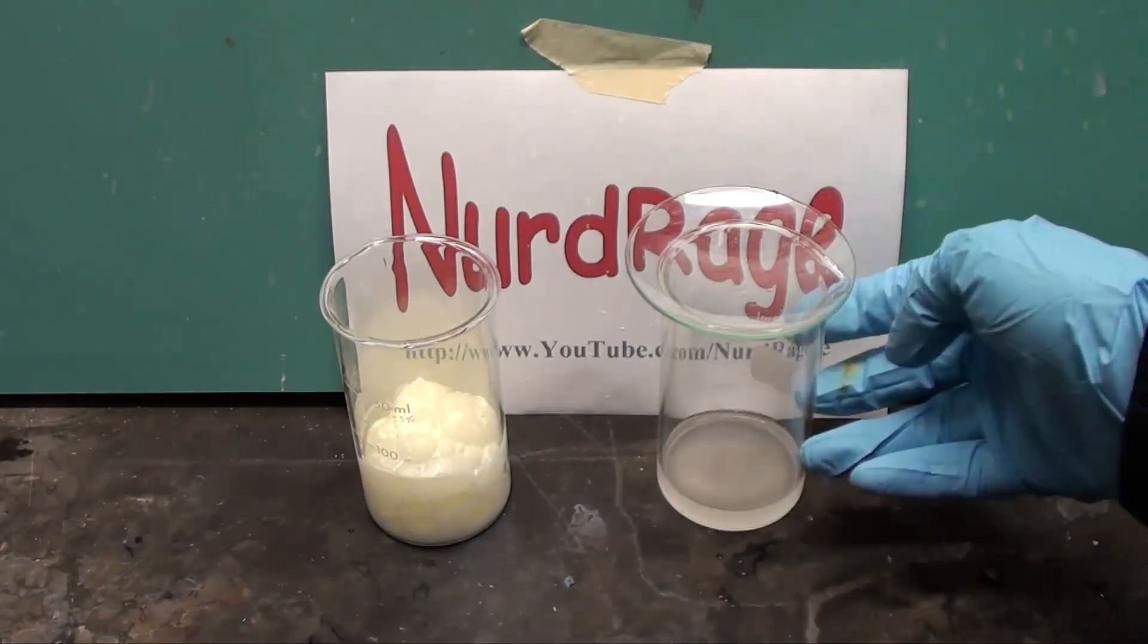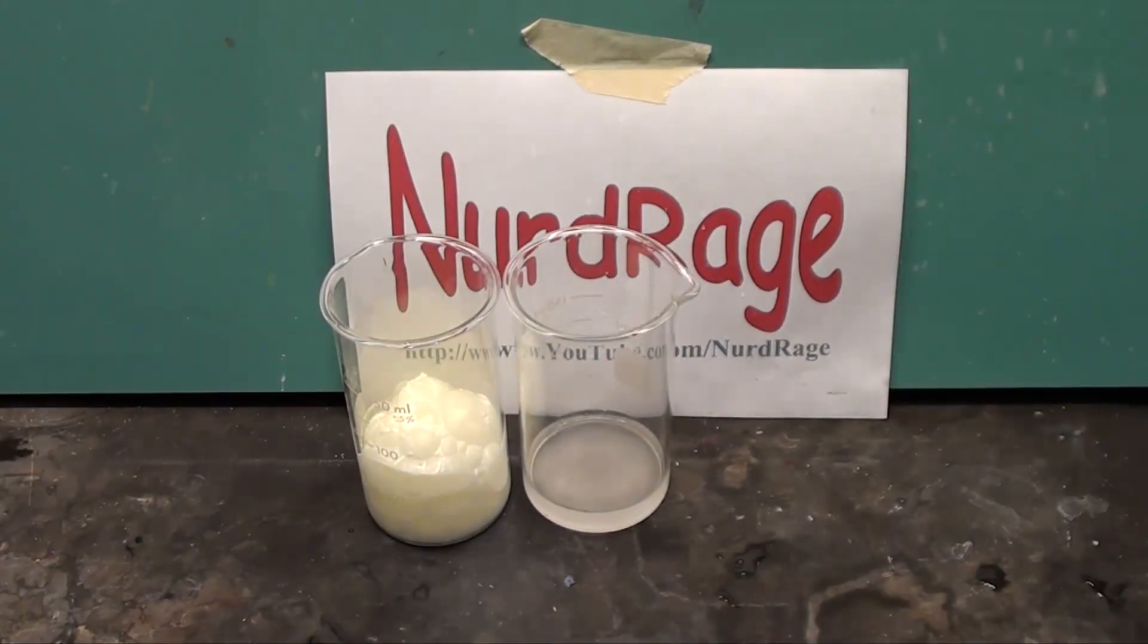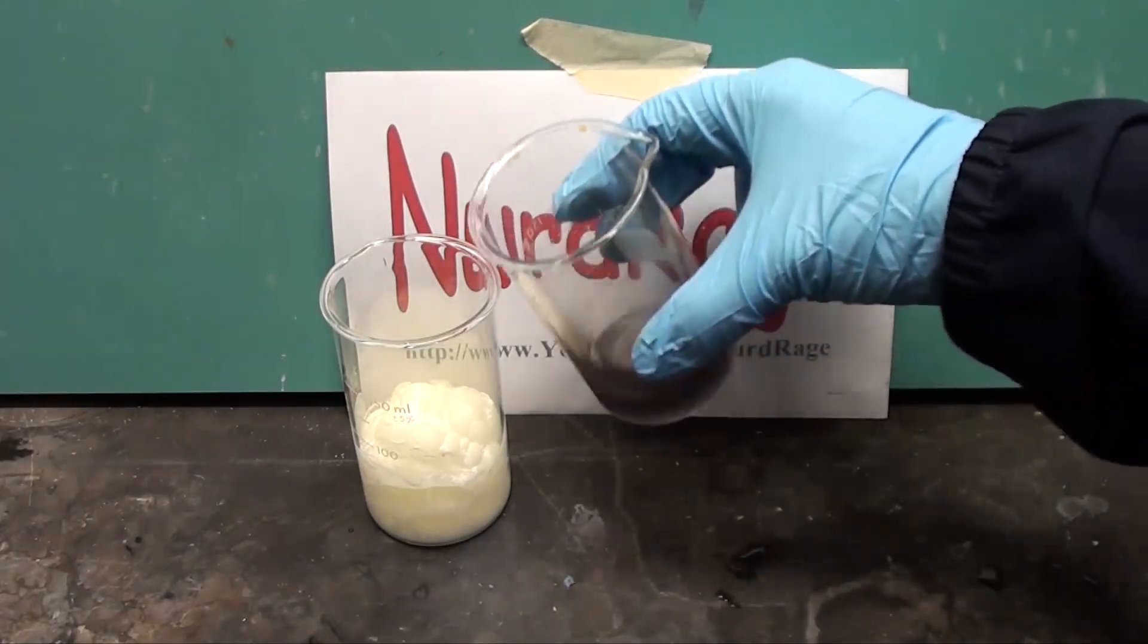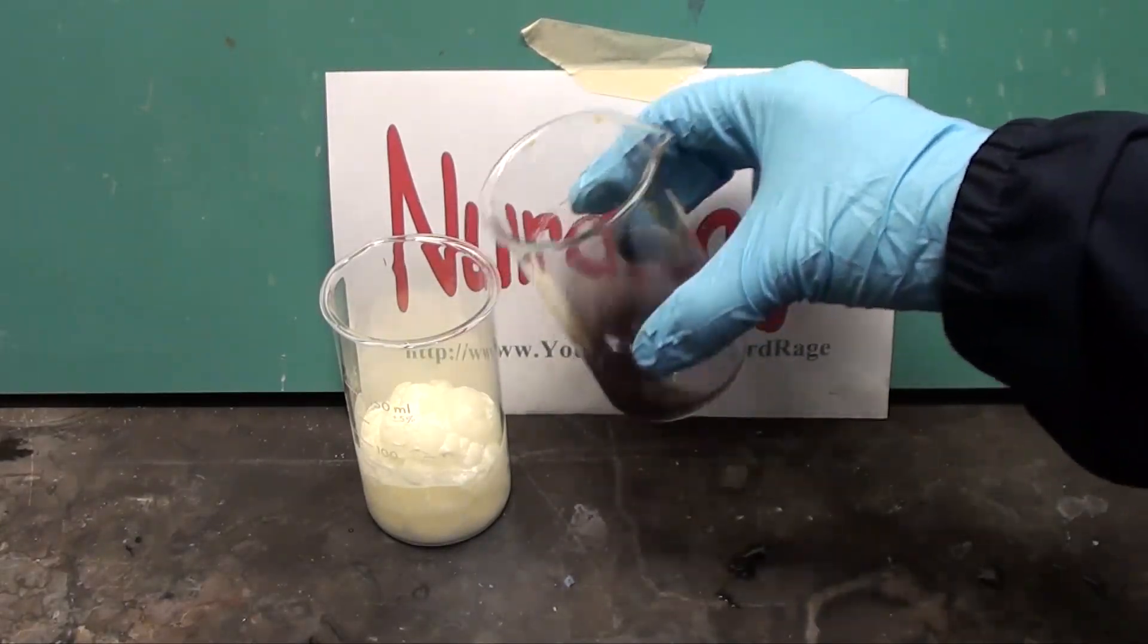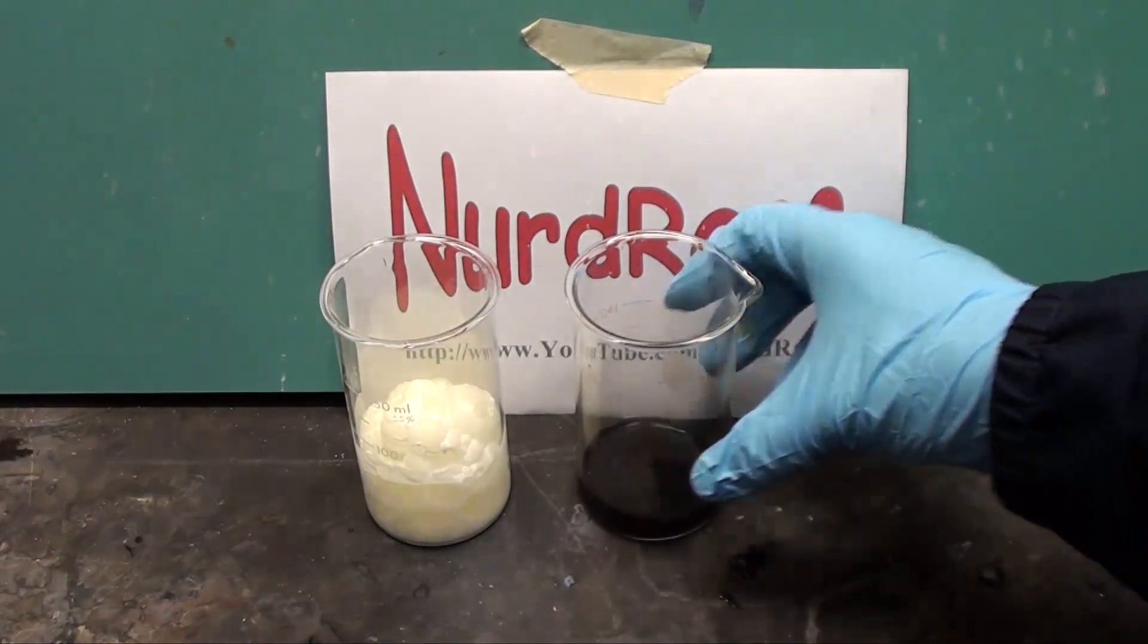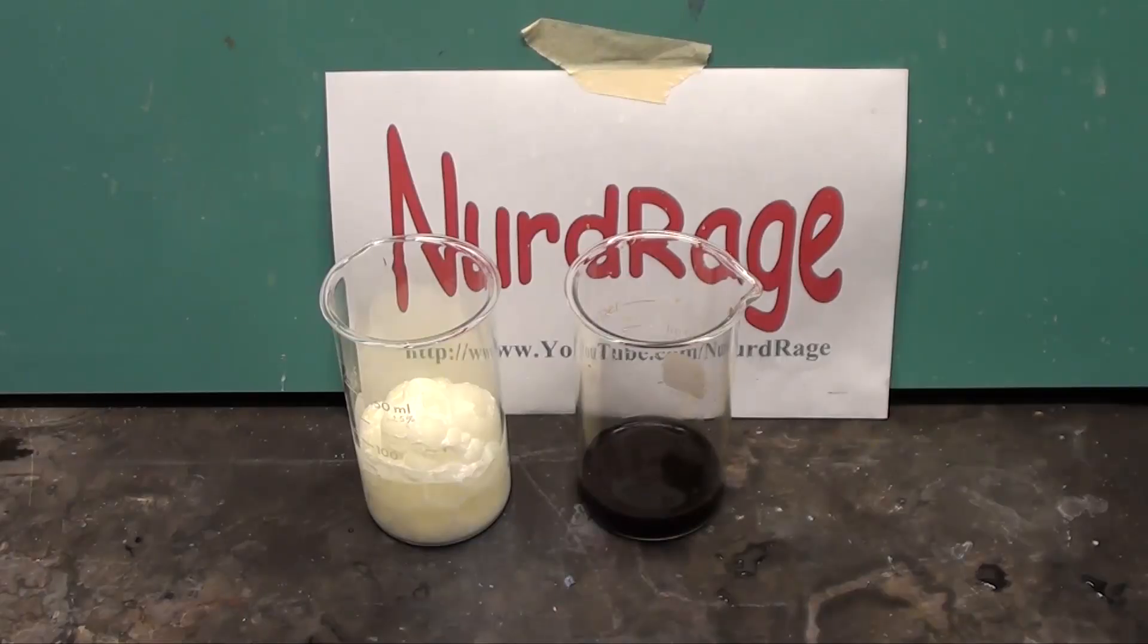Okay, I'm going to go a little further and let some of the chlorine fall into the tester solution. As you can see I didn't even have to pour the chlorine in. Enough is in the air right now to turn the chlorine tester solution dark. I hope this emphasizes again that this experiment must be performed in a fume hood.